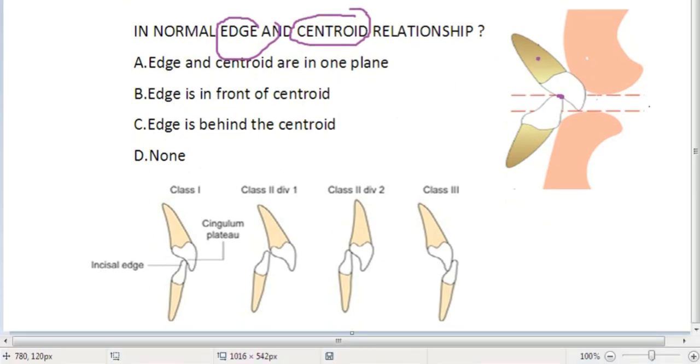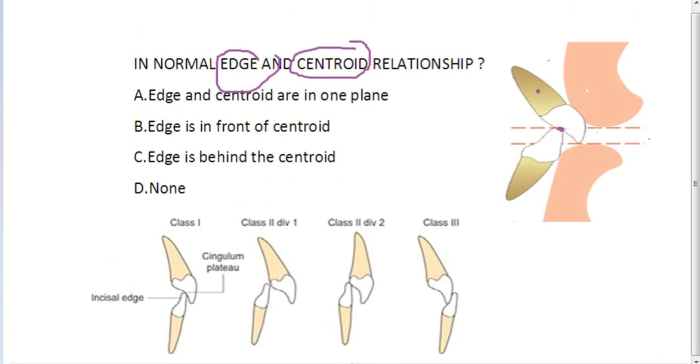So this is your centroid and this is your edge. If you take normally, the distance between your centroid and your edge is usually 2mm.